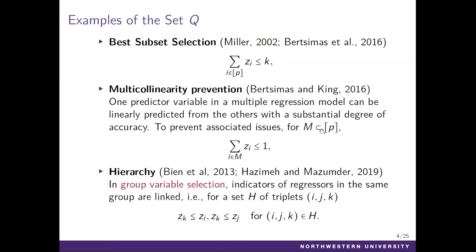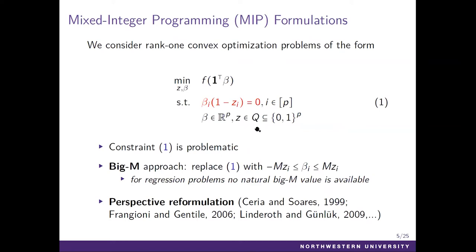More generally, we can formulate a more general rank-one convex optimization problem. Suppose we are minimizing over a rank-one convex function. This includes the case of the L2 regression problem and also logistic regression. One thing we notice is that we cannot easily handle the first constraint — it is problematic in the sense that it's non-convex, which means we cannot solve it efficiently using a convex optimization solver.